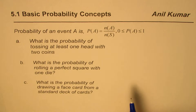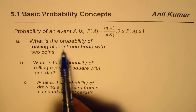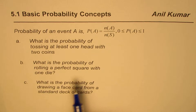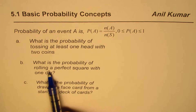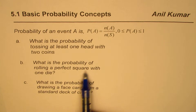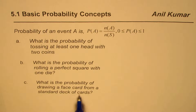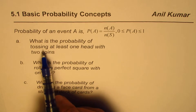Keeping that in mind, let's find the probability of a few cases. We have three examples here. First: what is the probability of tossing at least one head with two coins? Second: what is the probability of rolling a perfect square with one die? Third: what is the probability of drawing a face card from a standard deck of cards?